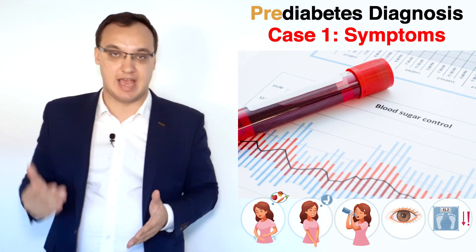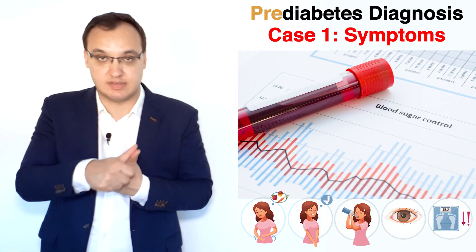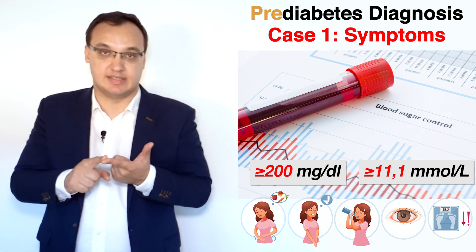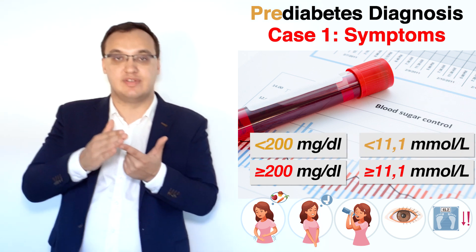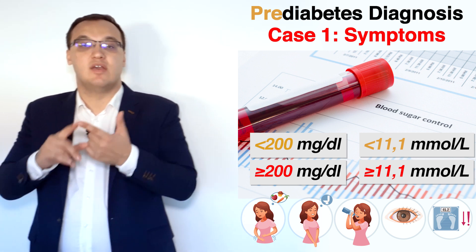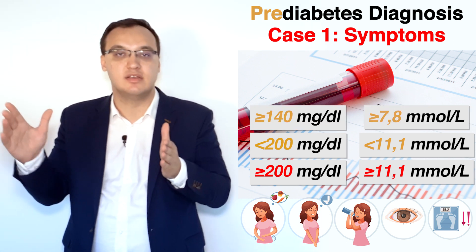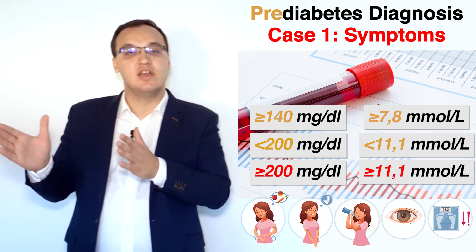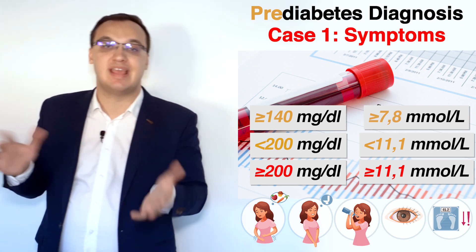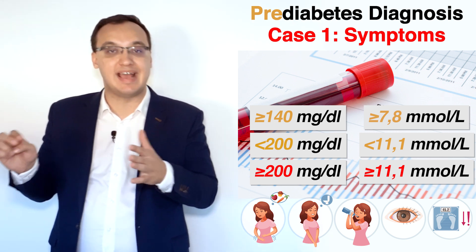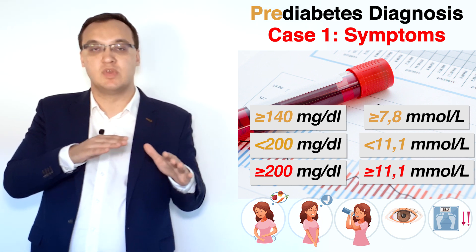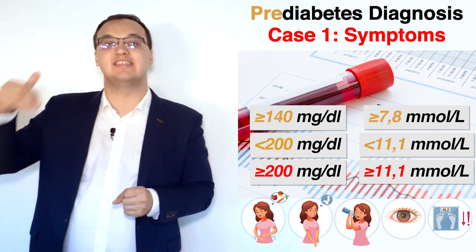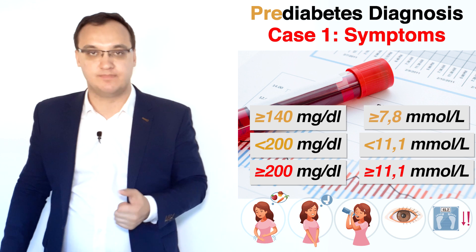Two different units are used in different countries and laboratories: milligrams per deciliter and millimoles per liter. For random blood glucose, the pre-diabetes range is 140 to 199 mg/dL, or 7.8 to 11.1 mmol/L. Everything above 200 mg/dL or 11.1 mmol/L is diabetes, and everything below 140 mg/dL or 7.8 mmol/L is normal — when dealing with random blood glucose levels.